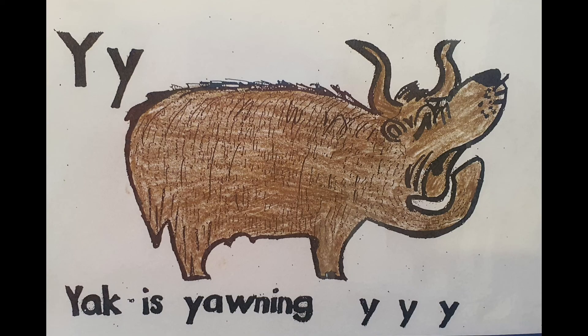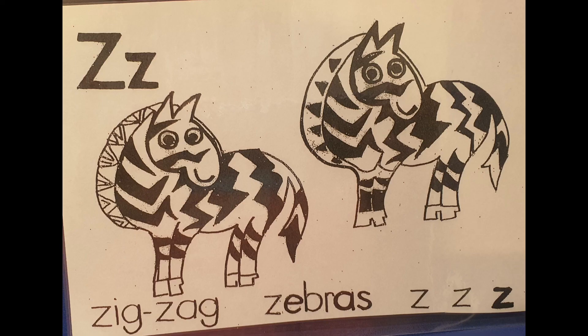Yak is yawning — y, y, y. Zig-zag zebras — z, z, z. Zig-zag zebras — z, z, z. These are the sounds our letters make.